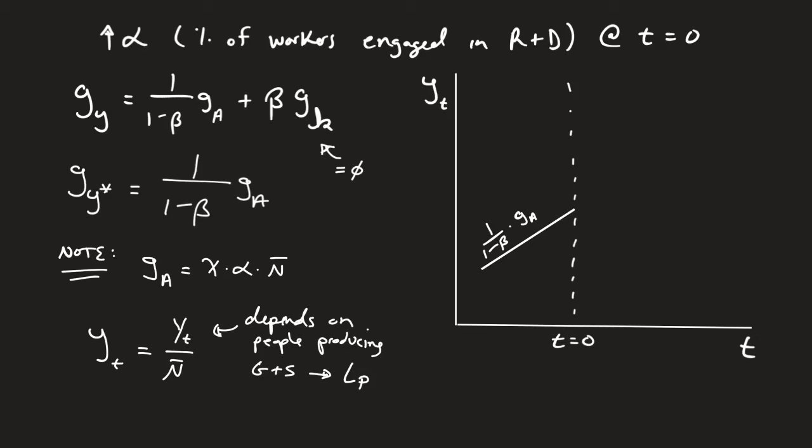So when alpha changes, when alpha increases, that means the number of people producing goods and services is going to decline. So right away, my output initially is going to take a hit.